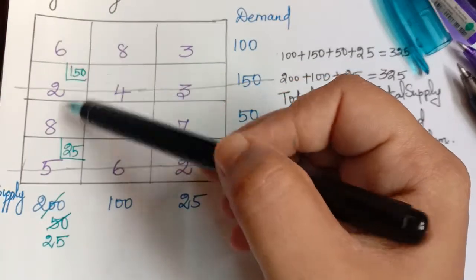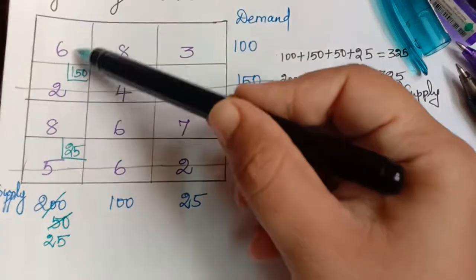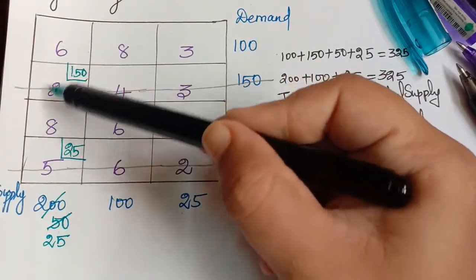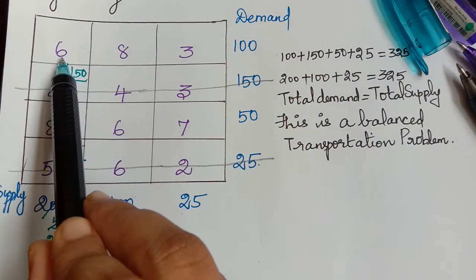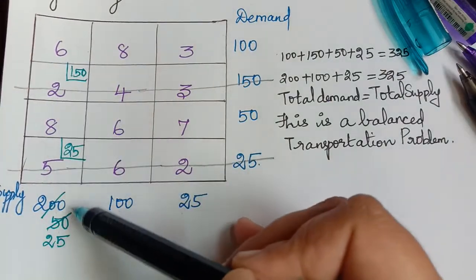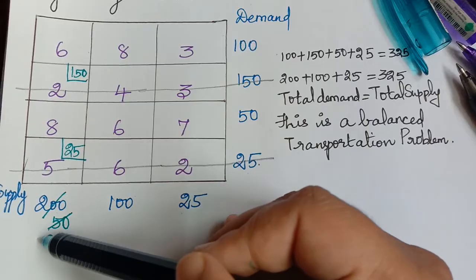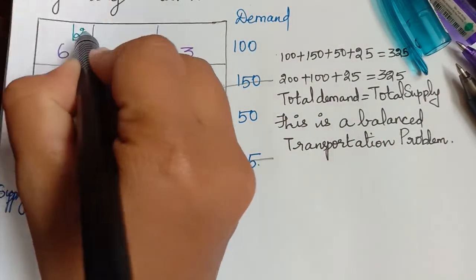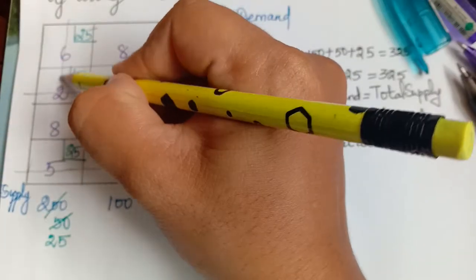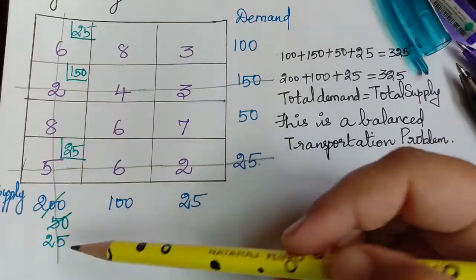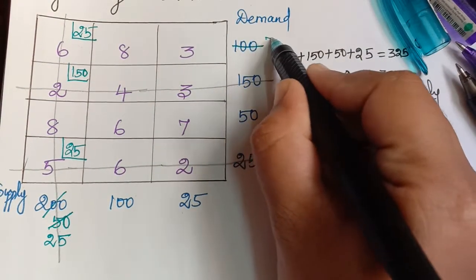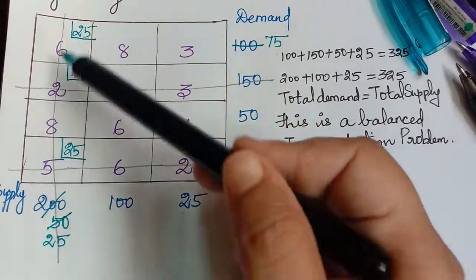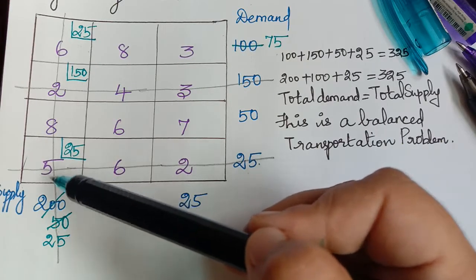Checking the first column again, two cells remain with values 6 and 8, and the minimum is 6. We make an allocation for this cell. The demand is 100 and the supply is 25, so the minimum is 25. We allocate 25 and strike off the column. Subtracting 25 from 100 leaves a remaining demand of 75. Now all cells of the first column are struck off, so we move on to the second column.